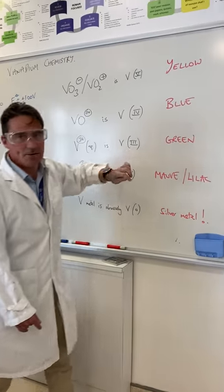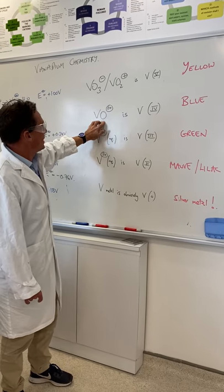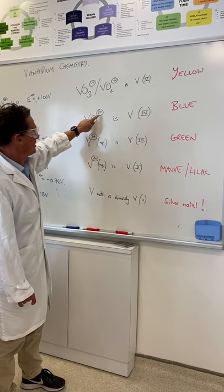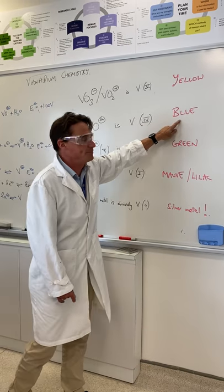You can see that's yellow. VO2+ — well, that's two minus, so that's going to be vanadium +4, and we're going to find out that's blue.